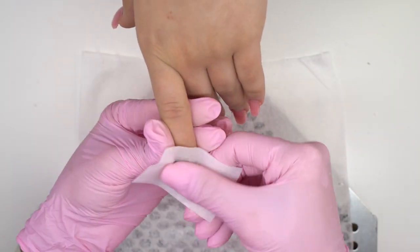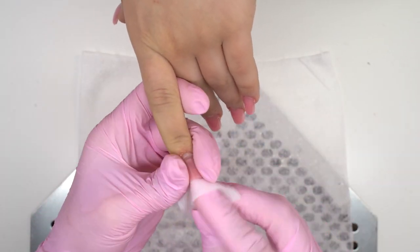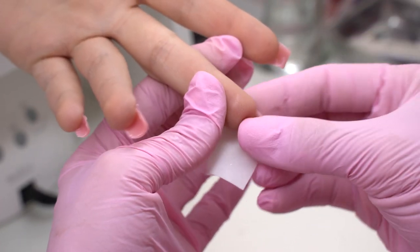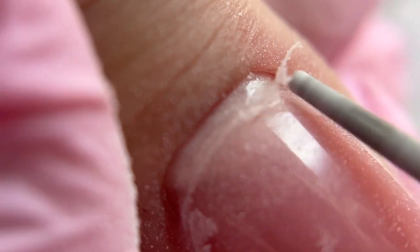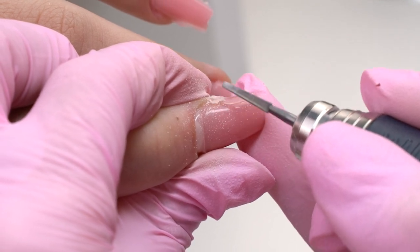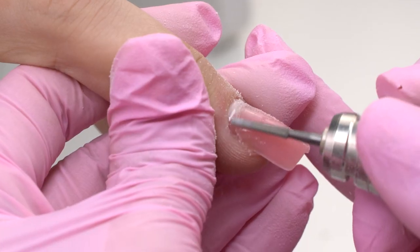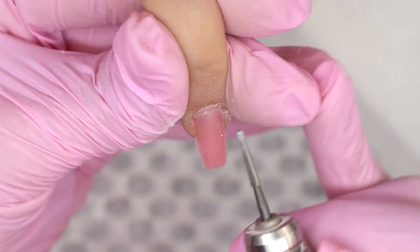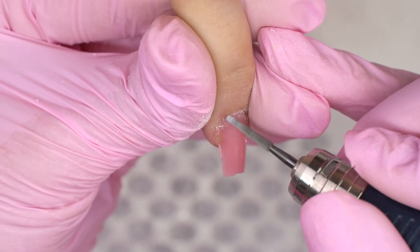Now we can proceed with filing. Wipe off the tacky layer first, in the cuticle zone and from the inside. Now let's move on to filing. Using a thin carbide drill bit, I removed the layering near the cuticle and all the pools. Make sure not to put the drill bit on its tip, so as not to over-file the nail plate.